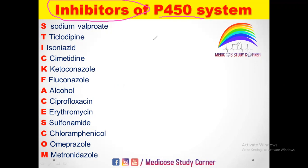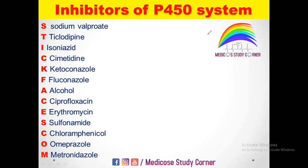P450 system inhibitors basically decrease the clearance of those drugs and increase the effect of those drugs. This is the effect of inhibitors of the P450 system. Now, coming towards the mnemonic for the drugs that inhibit the P450 system.